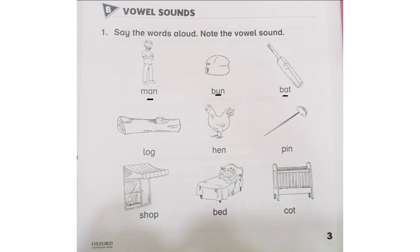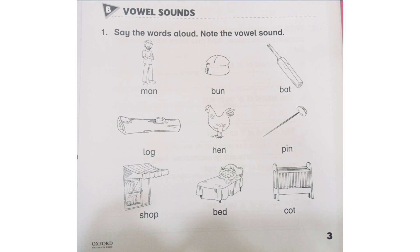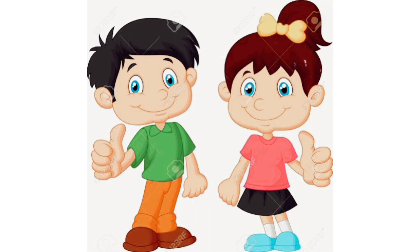Now you have to do it yourself. The remaining words are: Shop, Bat, Coat — turn to page number four — Jug, Clip, Jet, Aunt, Lip. Find out the vowel sound in each of the remaining pictures and underline it with a color or pencil. This is your today's task. You can also color the pictures and make them beautiful. Hope you enjoyed today's lecture — hope to see you next time. Till then, take care. Goodbye!